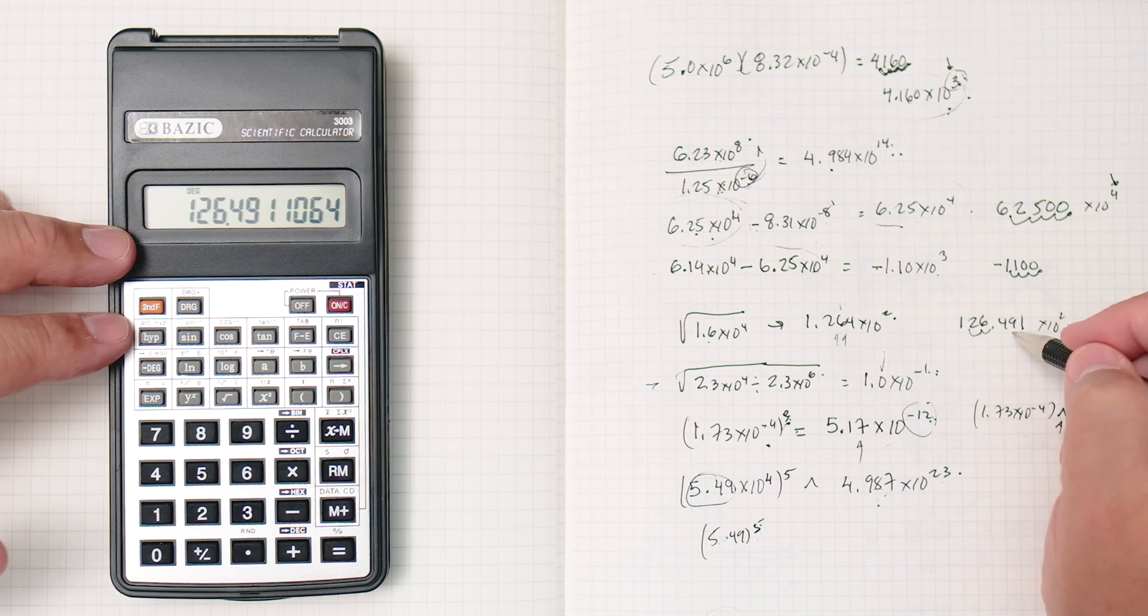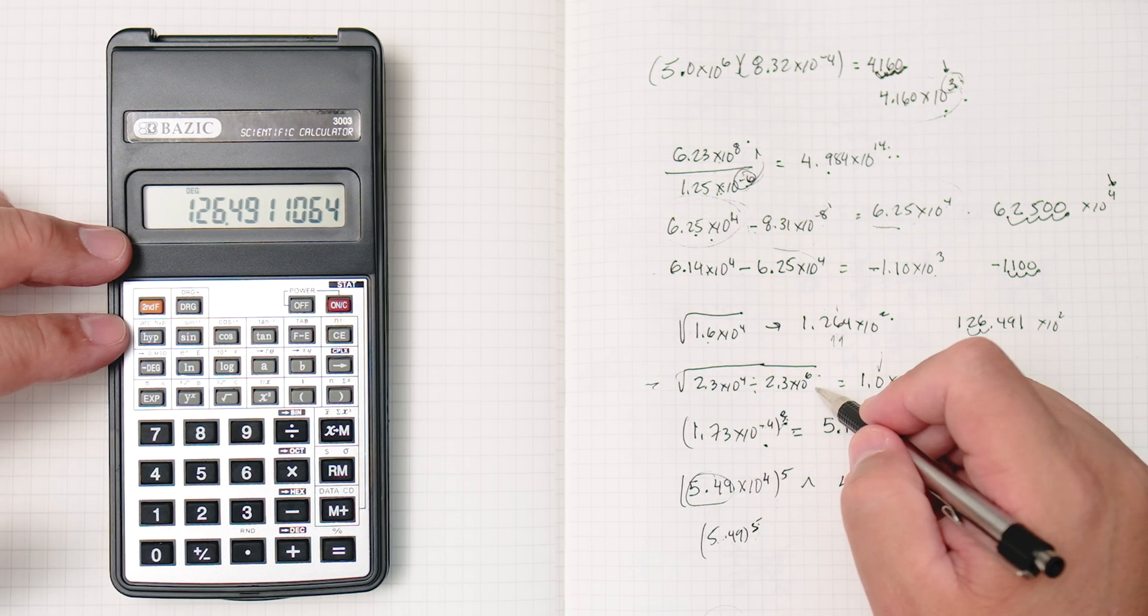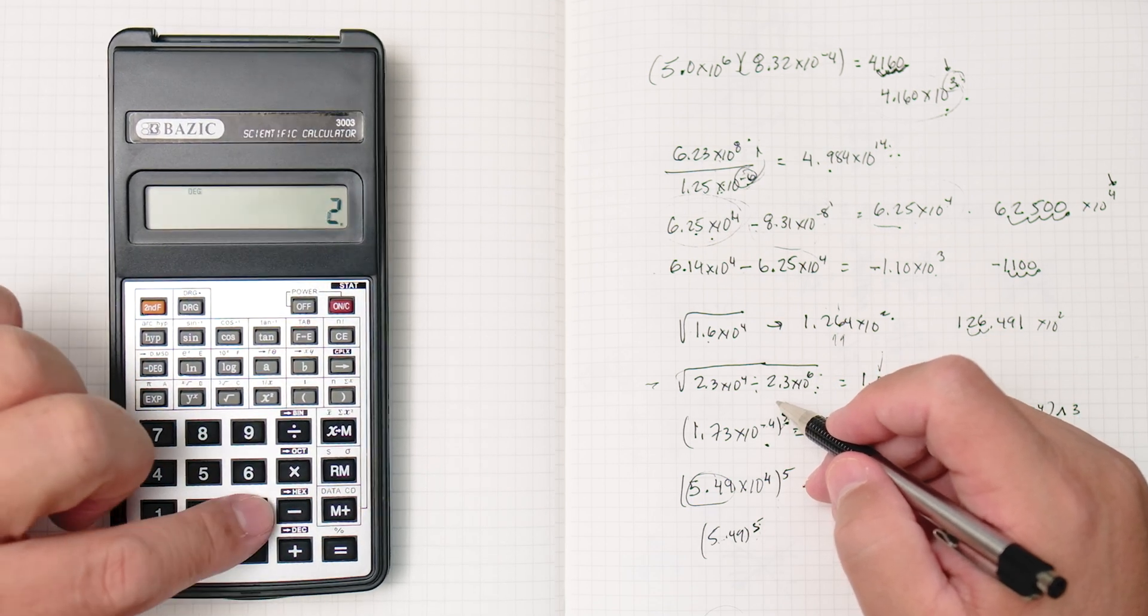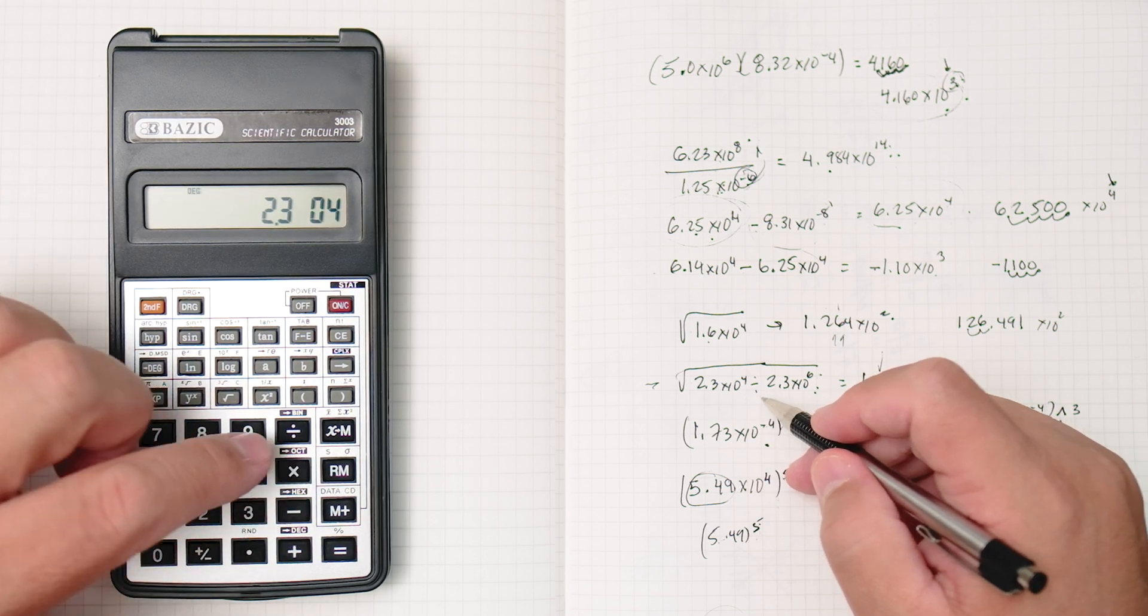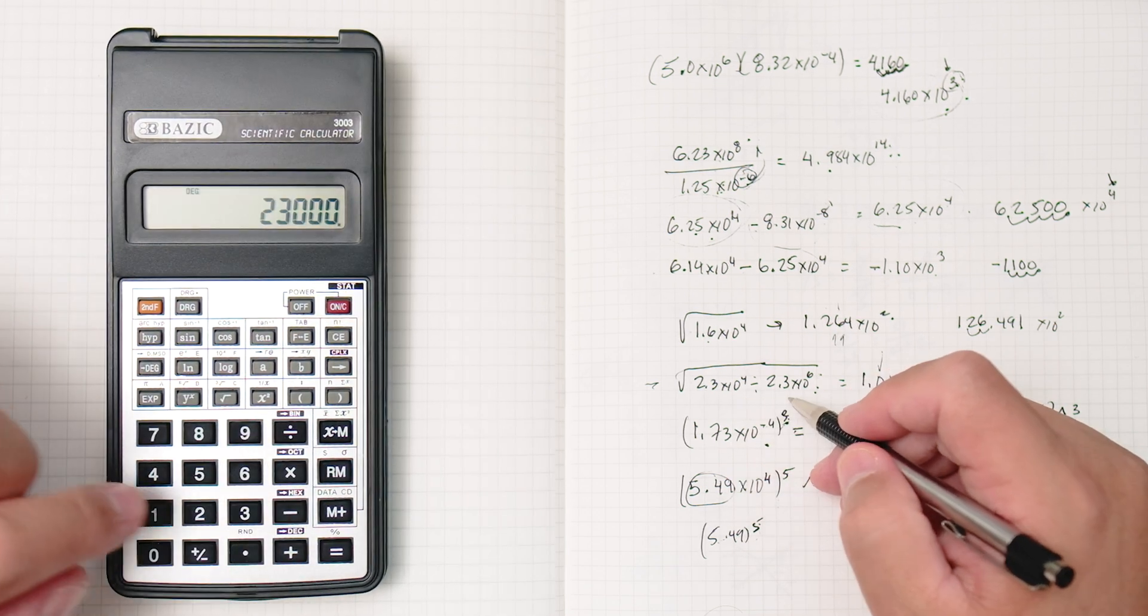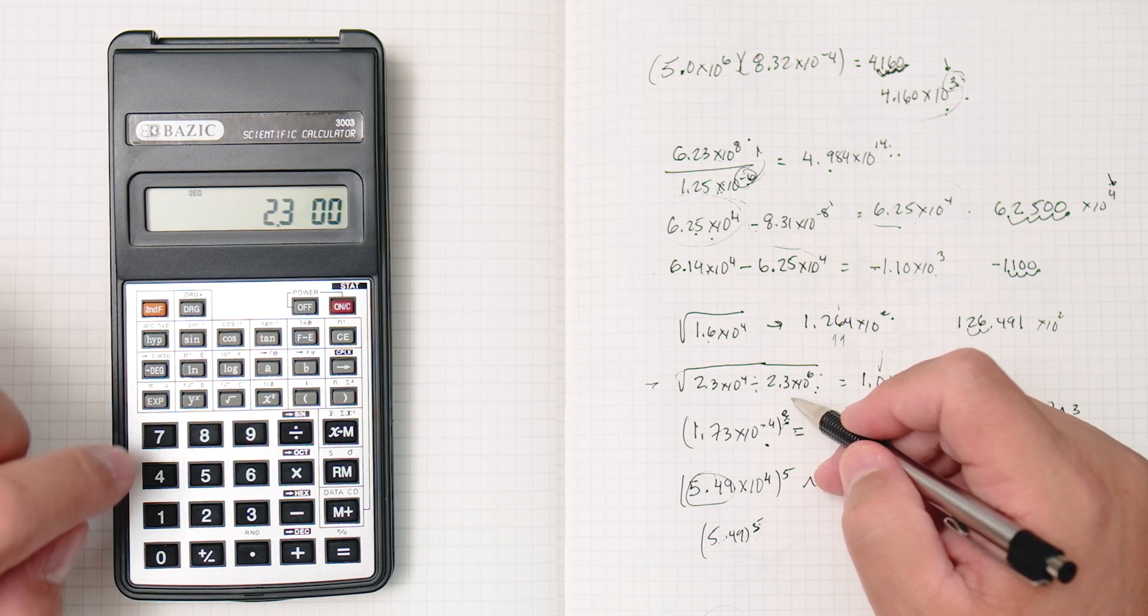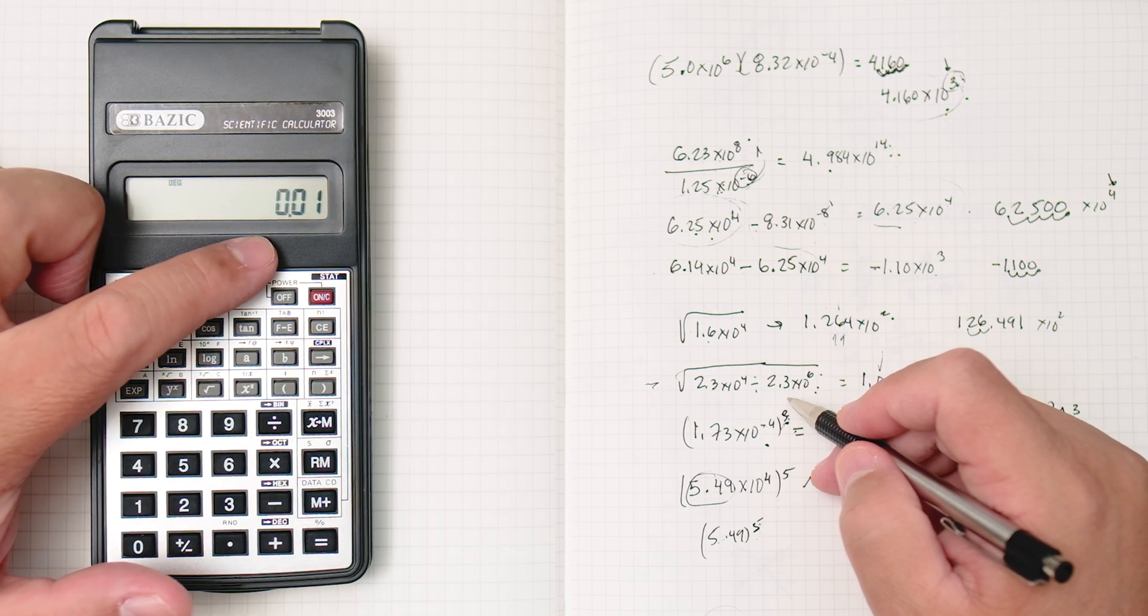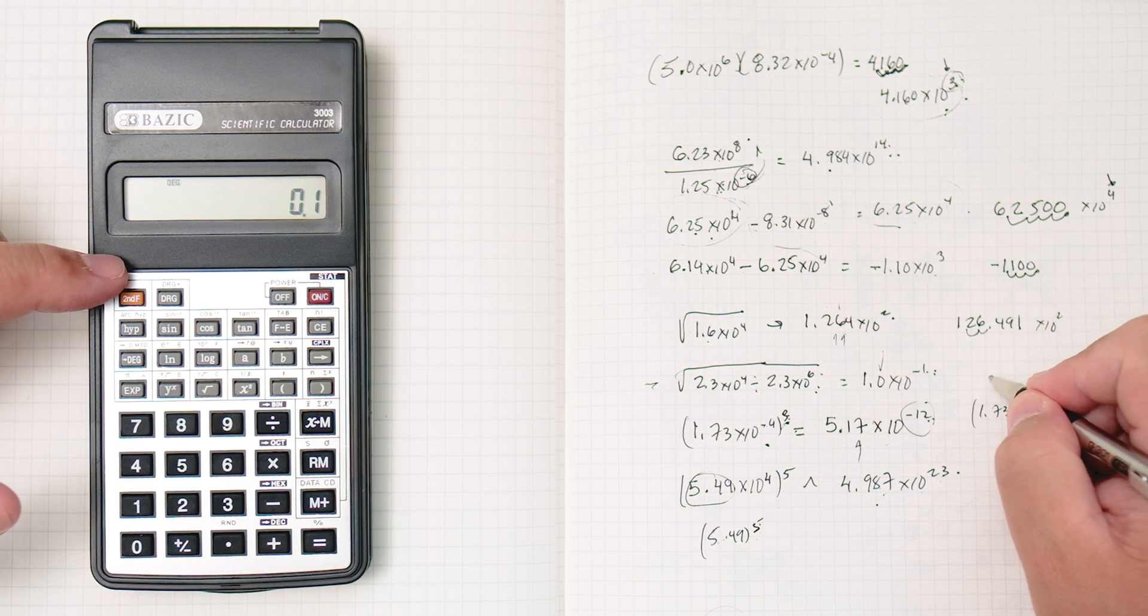Significant digits, you're going to have to ask your professor if there are any. Okay. This one, we do the math here first, and then we take the square root. Let's clear it. 2.3 times 10 to the 4th, divided by 2.3 to the power of 6, or times 10 to the 6, equals, gives you 0.01. We need to take the square root, and that gives you an answer of 0.1.